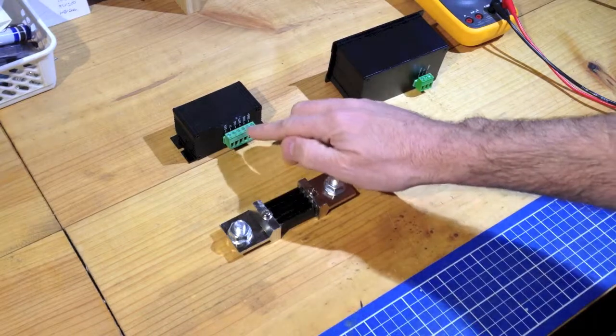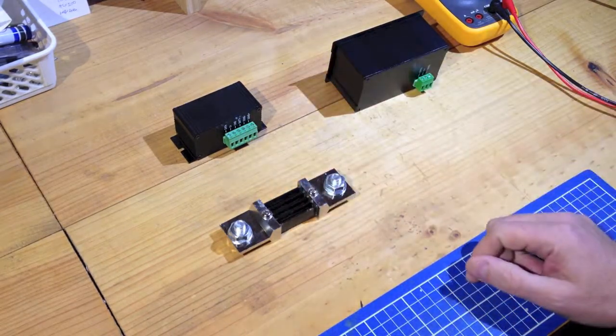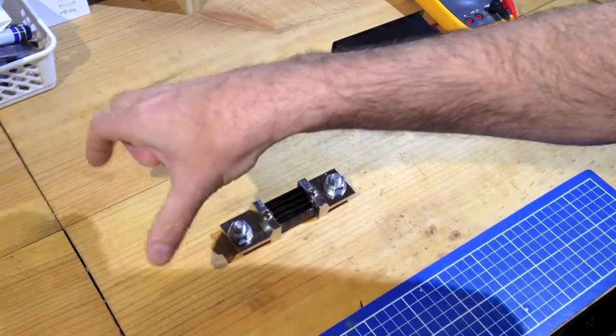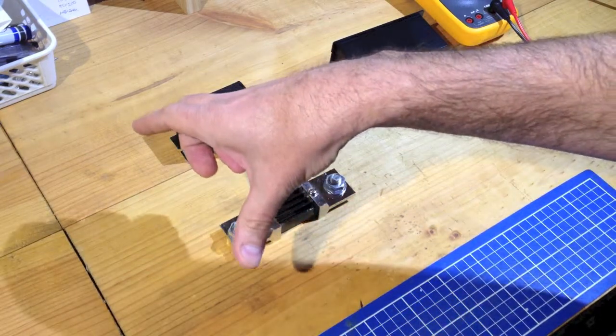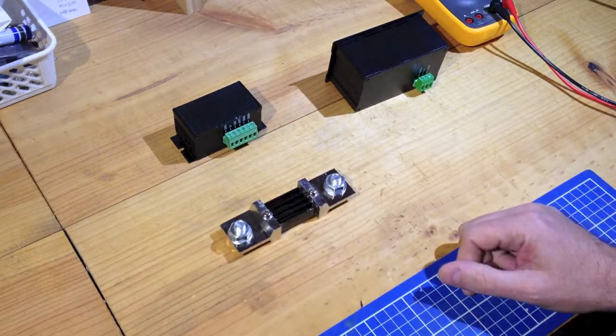The next two connections are for battery positive and for ground. And they simply are just two thin wires that can be run across the battery, and the battery positive obviously to the red or positive terminal of the battery and the ground to the negative or black side of the battery.